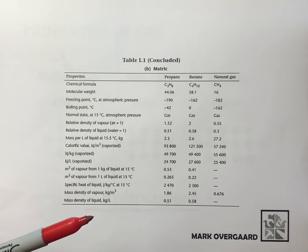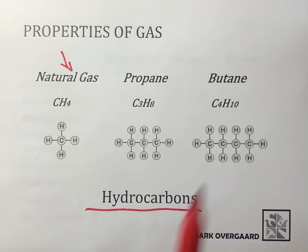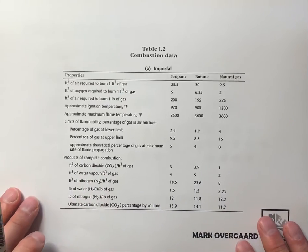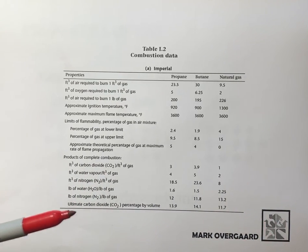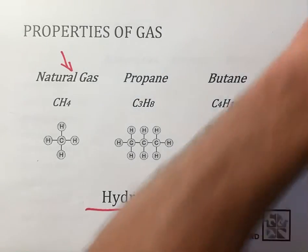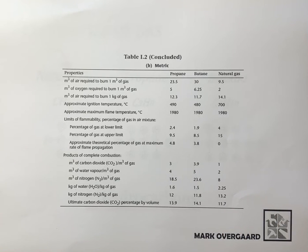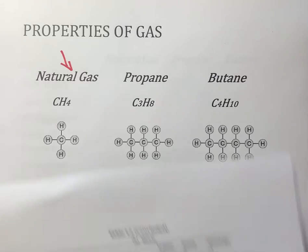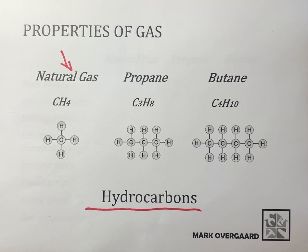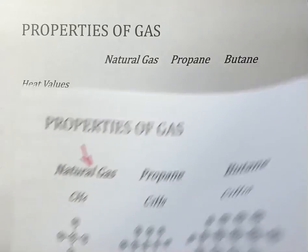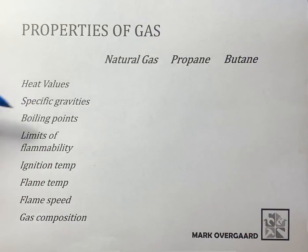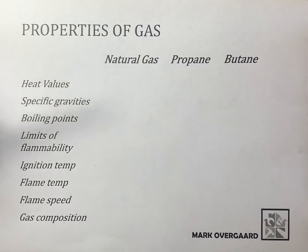Also in the back of your code book is combustion data — air requirements, ignition temperature, flame temperature — and we're going to talk about a couple of those as well. That table has both an imperial version and a metric version. Now, back to our sheet: natural gas, propane, and butane. The ones we want to deal with are heat values, specific gravities, boiling points, and so forth.